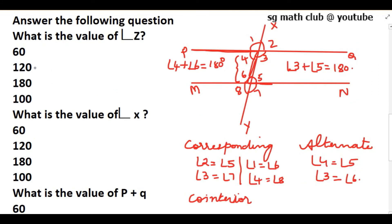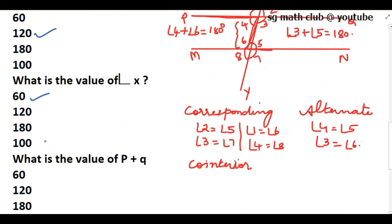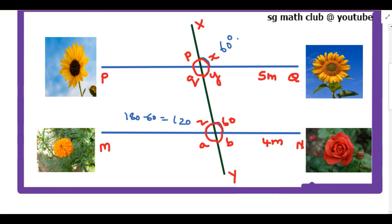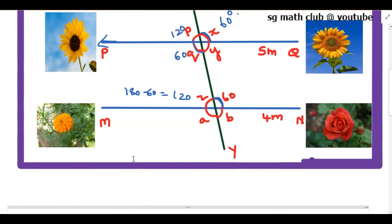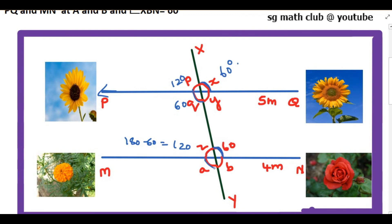So angle z is 120 degrees and angle x is 60 degrees. Next question: what is the value of angle p plus q? These two angles form vertically opposite angles, and by the linear pair axiom, p plus q equals 180 degrees. The linear pair axiom states that if a ray stands on a straight line, the sum of the adjacent angles formed will be 180 degrees. Next question: which angle is the corresponding angle to angle a? The angle corresponding to angle a is angle q.